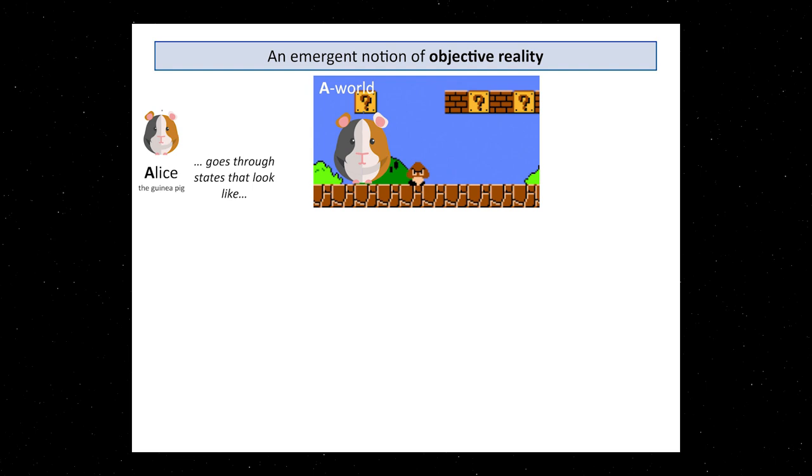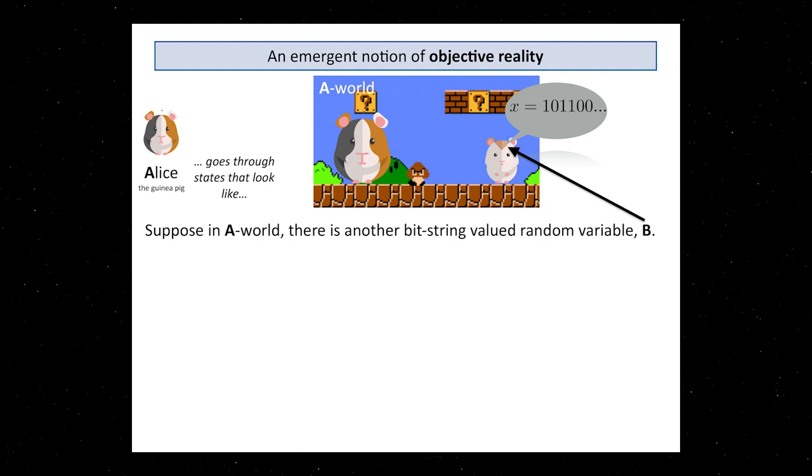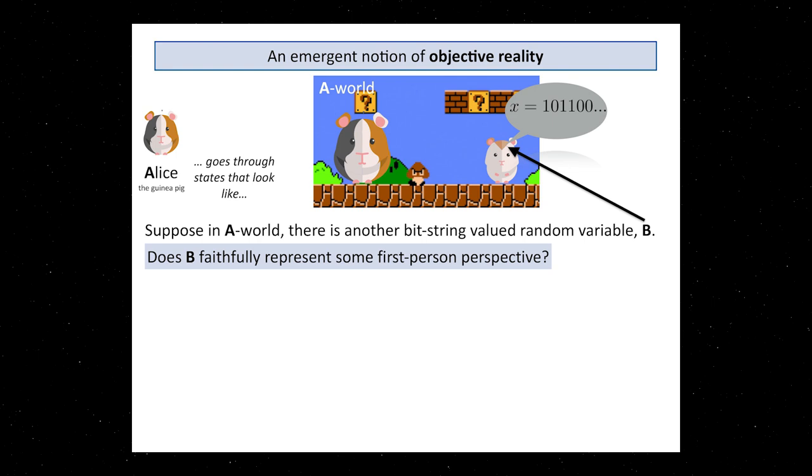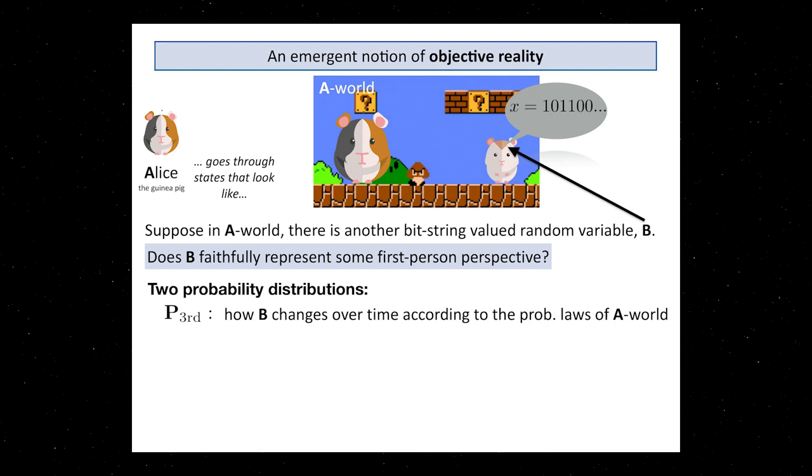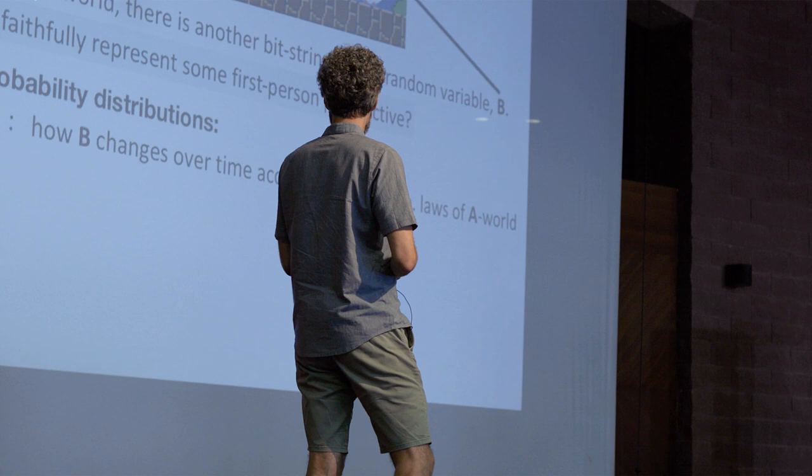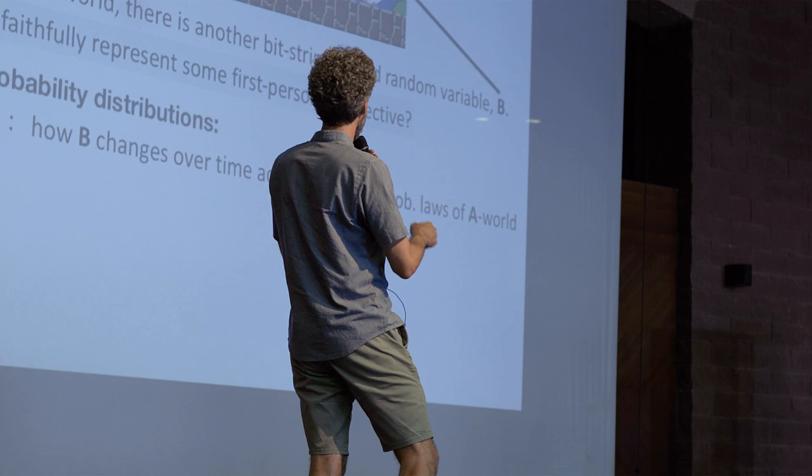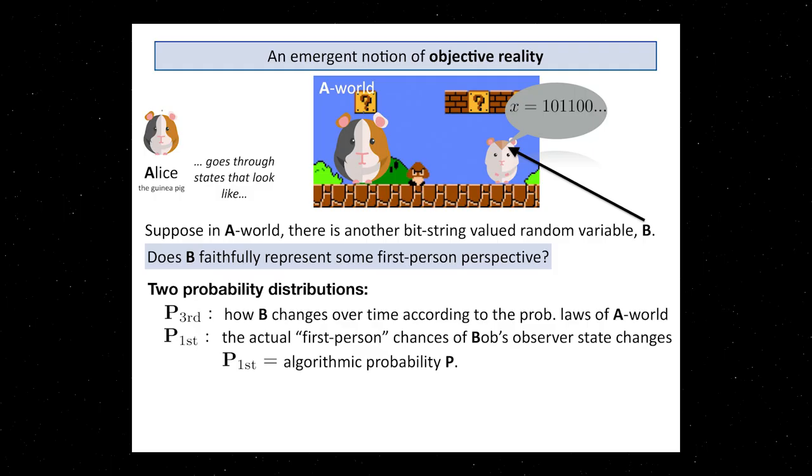Suppose in her world, there's something else that she finds interesting. Like I in my world can point to this thing over there and say, that's Scott. That's kind of an interesting piece of data, like a bit string valued random variable. What you can now ask is, does that other thing B actually faithfully represent some first person perspective? We could formalize it by comparing two probability distributions. There would be something like a third person probability. Third person probability will tell you how this thing B here changes over time according to the laws of a world. But there's also a first person probability. To this thing, you can associate an observer state, you can ask that actual thing, first person Bob, what happens to Bob? And that should be algorithmic probability. A priori, this could be two different things.